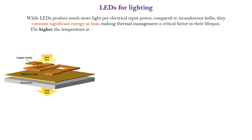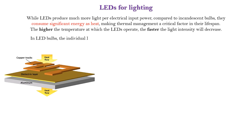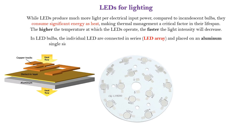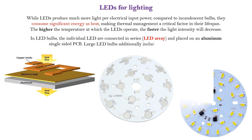The higher the temperature at which the LEDs operate, the faster the light intensity will decrease. In LED bulbs, the individual LEDs are connected in series — an LED array — and placed on an aluminum single-sided PCB. Large LED bulbs additionally include a heatsink to remove heat.